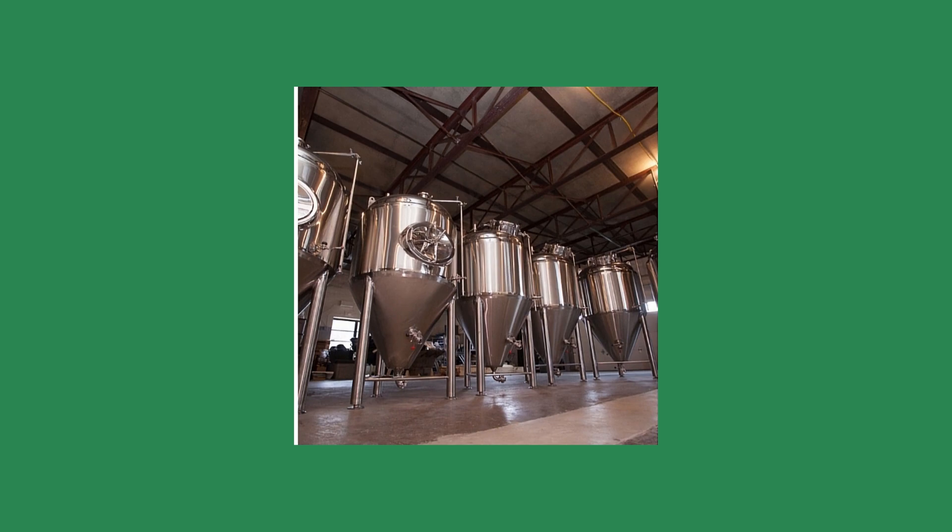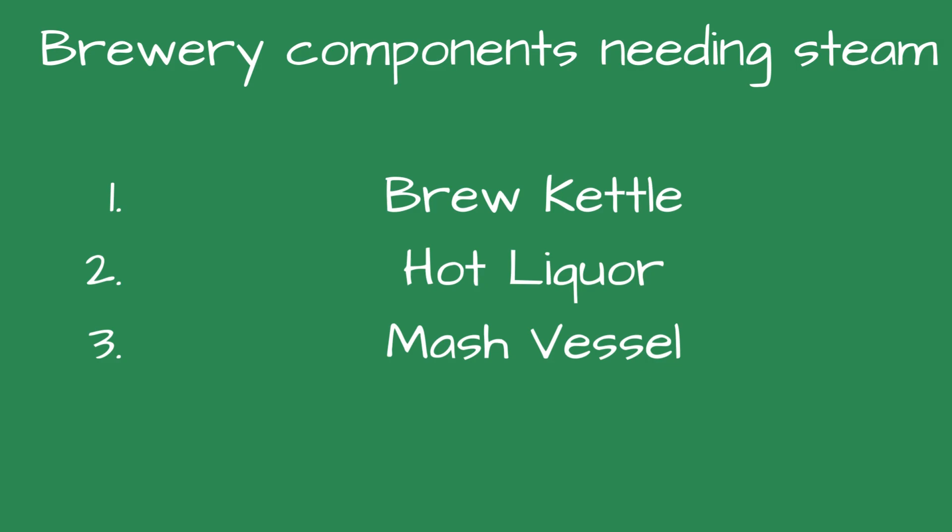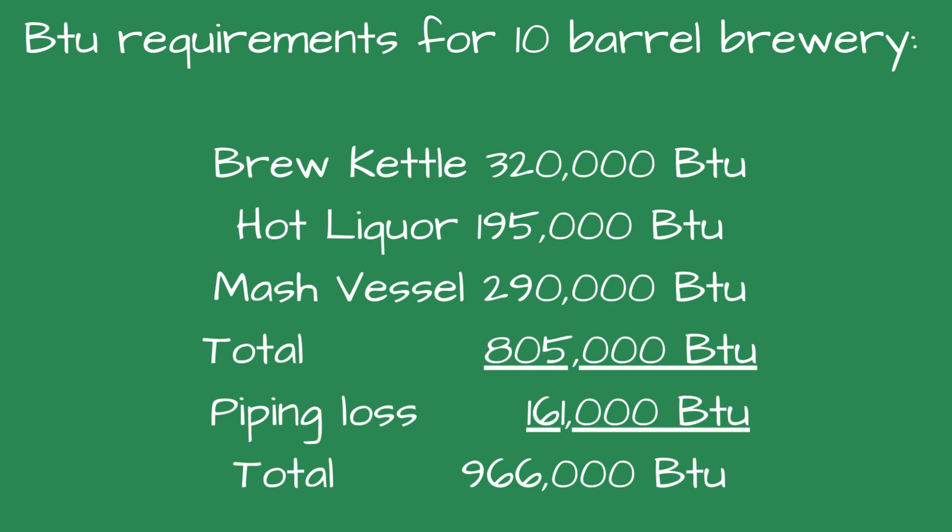Before sizing a brewery boiler, the planned operation should be discussed with the owner or brewer. There are typically three steps in the brewing process where steam may be used: brew kettle, hot liquor, and mash vessel. In the beginning, brewers may stagger the different stages. As sales grow, the brewer may operate the stages simultaneously to meet increased demand. For a typical 10-barrel brewery, if the brewer plans to stagger the brewing processes, a boiler with a BTU output of 400,000 would work for each step. To handle simultaneous operation, the boiler would have to be more than double that size. The drawback to sizing for simultaneous operation is that when only one process is operating, the boiler will short cycle.